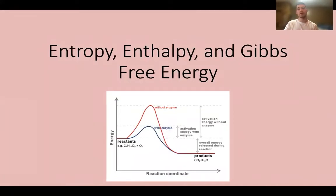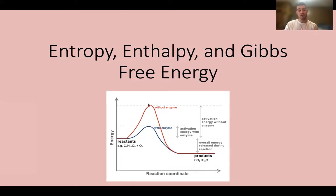Entropy, enthalpy, and Gibbs free energy are all important concepts when looking at the thermodynamics of a reaction. We have a reaction coordinate diagram with starting reactants, a hump representing the activation energy without an enzyme and with an enzyme, and then the products. We can see that the reactants are higher energy than the products, so this reaction is releasing energy in the process.